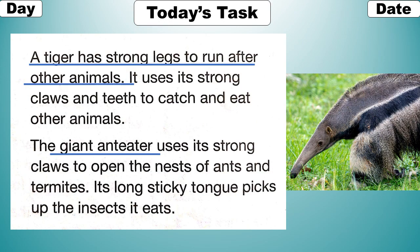A tiger has strong legs to run after other animals. It uses its strong claws and teeth to catch and eat other animals. Tiger ki strong legs hoti hain jis se wo doosre animals ke pichhe bhaagta hai, aur strong claws aur teeth hote hain jis se wo doosre animals ko pakarta aur khaata hai.